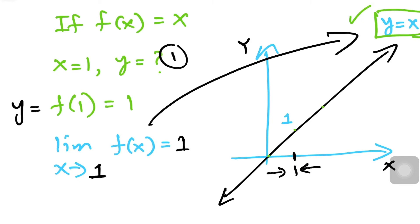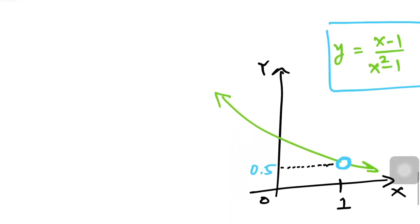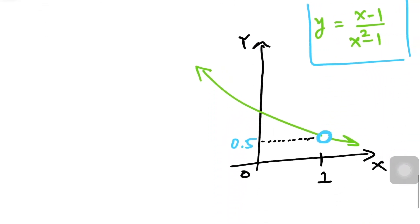As x approaches one, the y-value is approaching one. So that's what it means: as x approaches one, the height or y-value is approaching one. That's the easiest example; let's work on a different one.